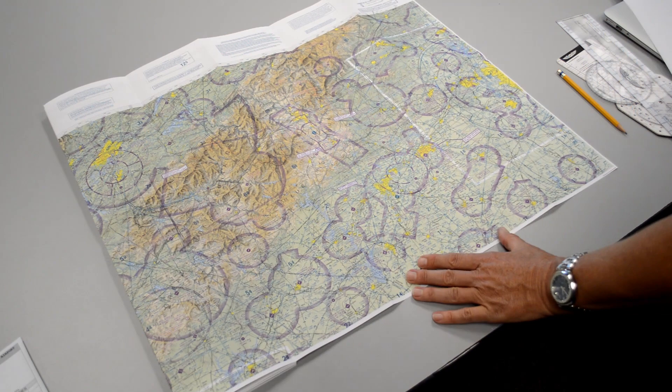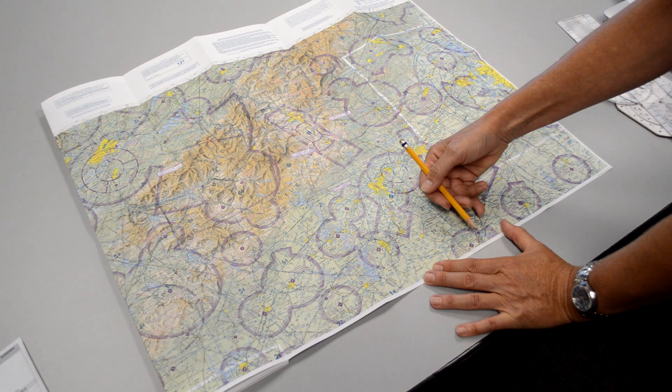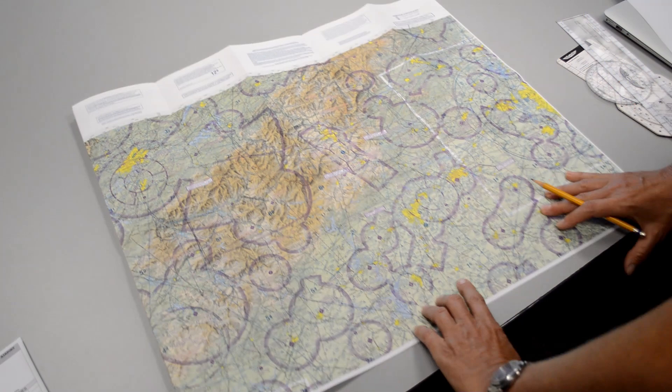What they want you to do is to first realize that part of the chart is going to overlap from this side to the other side. For example, I see the Greenwood Airport right here, and if I flip to the other side of the chart, I also see the Greenwood Airport here.